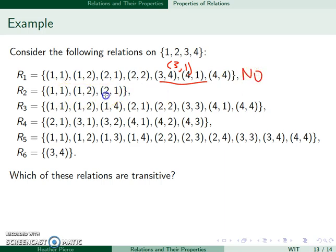In addition here, 2,1 and 1,2 should combine to give me 2,2 which is not in there. R3 I have 1,2 and 2,1 which would give me 1,1. I have 1,4 and 4,1 which would give me 1,1. And I have 2,1 and 1,2 which would give me 1,1 or would give me 2,2. This one is transitive.